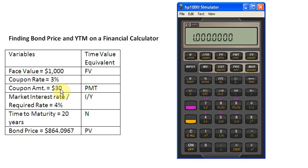Then my coupon amount is $30. So, I'm going to punch in 30 and store it into my payment button.